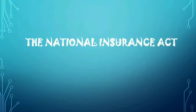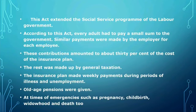The National Insurance Act was a social service program brought by the Labour government. According to this Act, every adult had to pay a small sum to the government. Equal payment was made by the employer for each employee. These contributions amounted to about 30% of the cost of the insurance plan, and the rest of the money was provided by the government through general taxation.